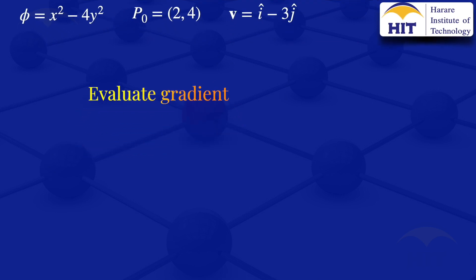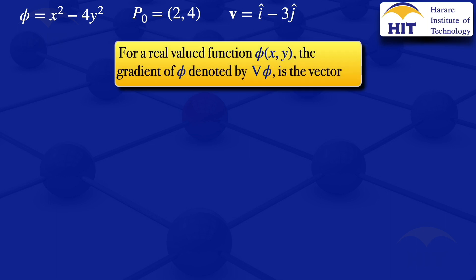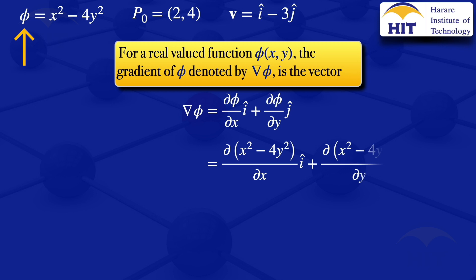The first step is to find the gradient of the scalar field φ. Our φ has two variables x and y, so our gradient has two components i and j. So grad φ equals the partial derivative of φ with respect to x times i, plus the partial derivative of φ with respect to y times j.